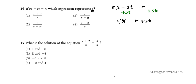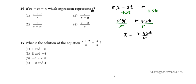So to finally isolate x, we're going to divide both sides by r because rx basically means r times x. The relationship between r and x is multiplicative. So to break that relationship, we divide both sides by r. This divides out, so we'll have x equals r plus st over r. So our answer is option number one.